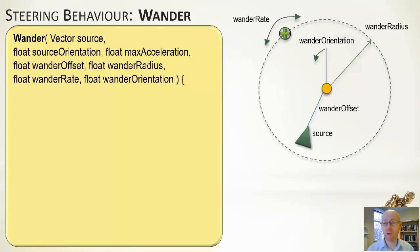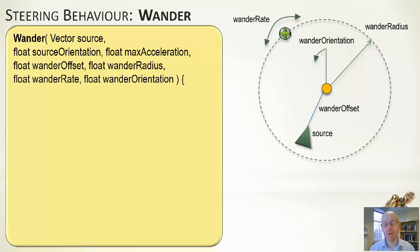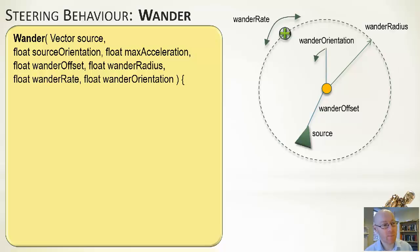Looking at the implementation: the source triangle faces a direction, a wander offset determines how far out the center of the circle is, and the circle has a particular radius. A wander orientation defines where on the circle the target currently sits, and the wander rate controls how much it changes per update. The algorithm takes source vector, source orientation, maximum acceleration, maximum angular acceleration, wander offset, wander radius, wander rate, and current wander orientation.